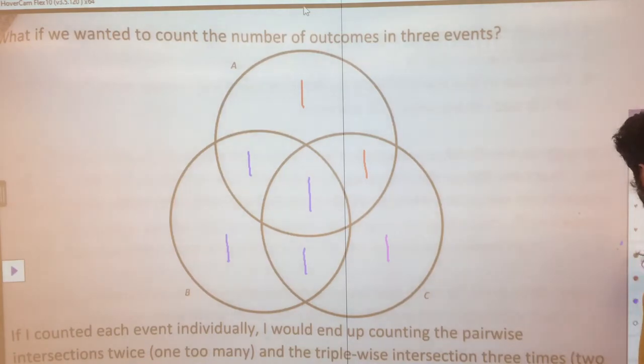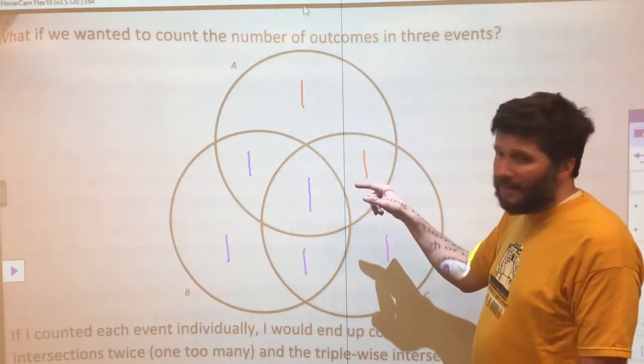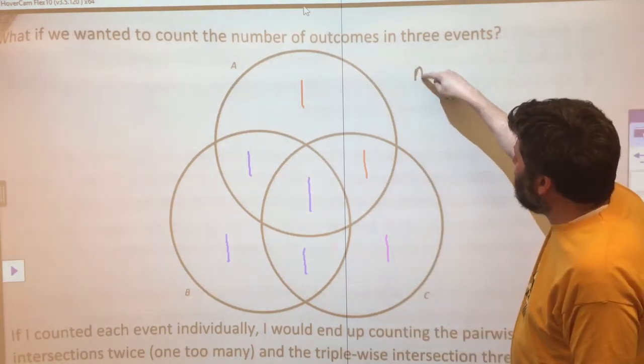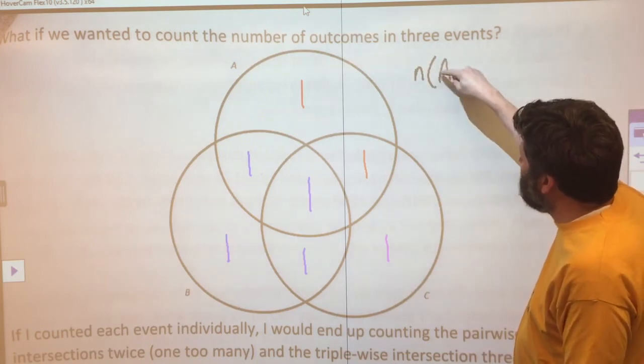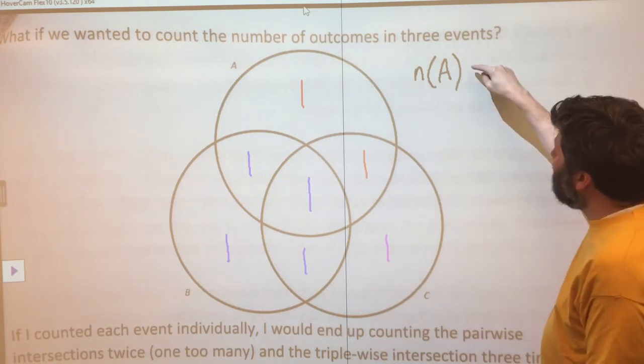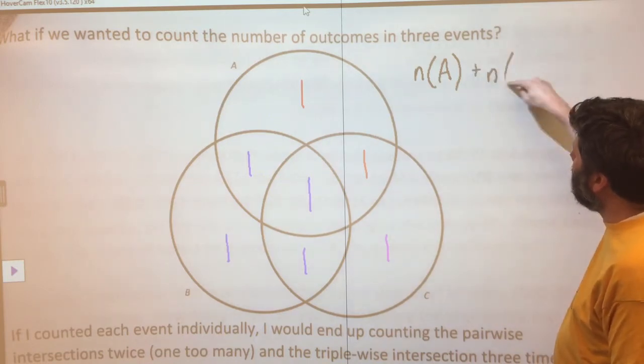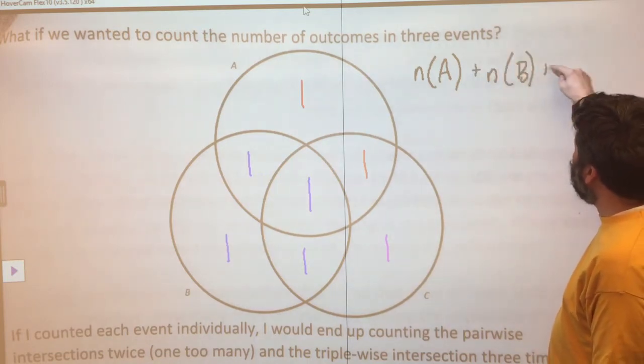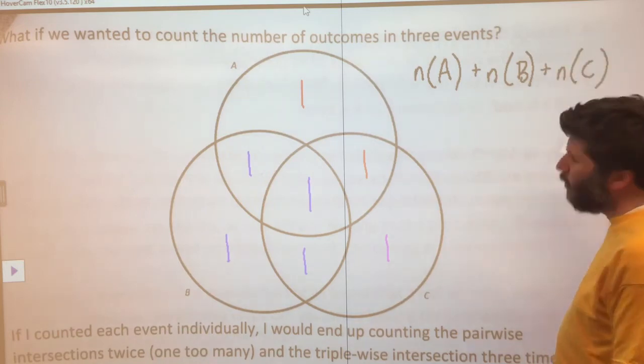Let's summarize what we did to get this count. We counted the number of things. We're going to use our notation n being the function that says how many outcomes are in each set. I counted each thing individually once.